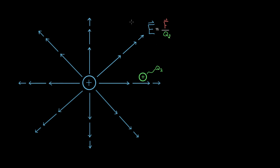Something that would be useful to have is a formula that would let us figure out what the electric field is being created at that point in space without even referring to Q2. So it'd be useful to have a formula that tells us what electric field Q1 is creating at that point in space without referring to Q2 at all. Is there a formula for that? There is, and it's not that hard to find.